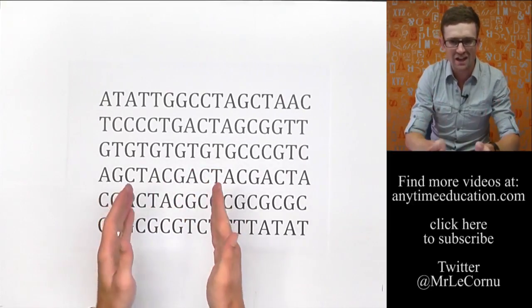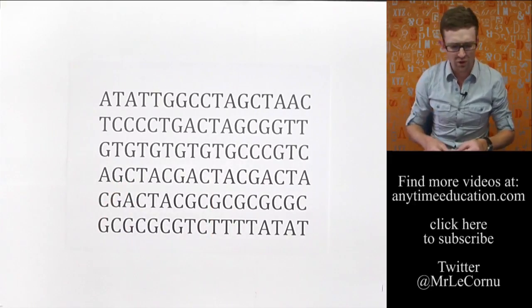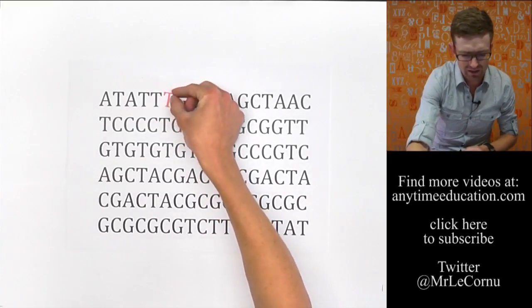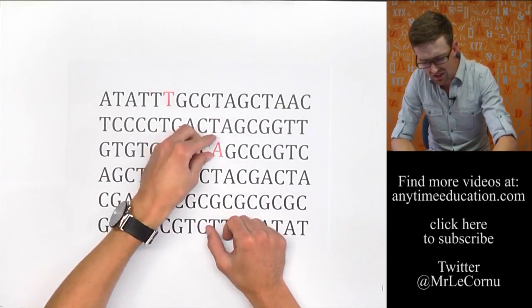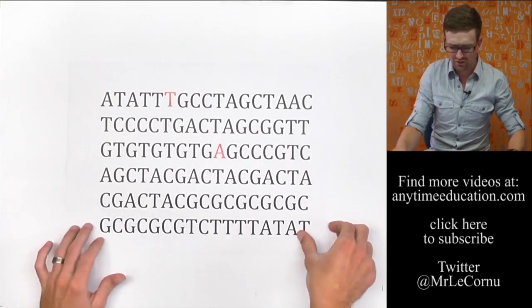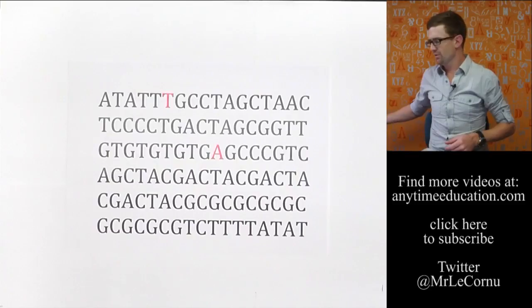So a mutation is when a change occurs in this base sequence. So, for example, if we have this G that is changed to a T, or if this T is changed to an A, we call that a mutation.